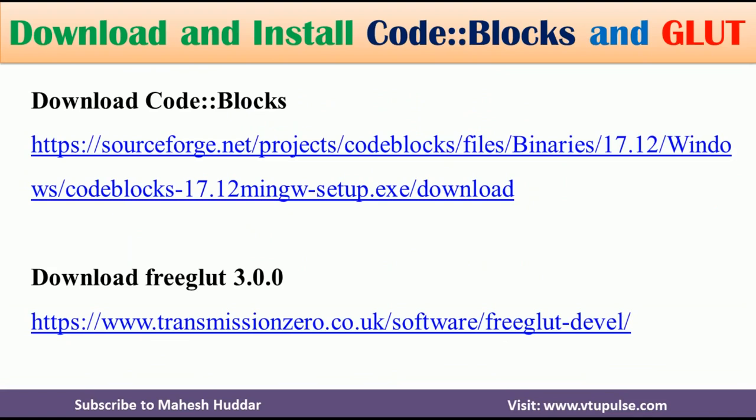First, you need to download CodeBlocks software. To download CodeBlocks software, follow this particular path. Once you download the CodeBlocks software, you need to install it in your Windows environment. Also, you need to download FreeGlut 3.0.0 library. The links to download CodeBlocks software and FreeGlut 3.0.0 are given in the description below. Follow those particular links to download both the softwares.